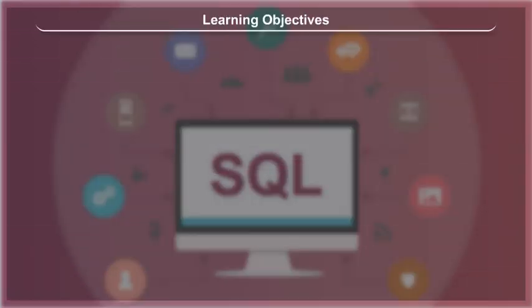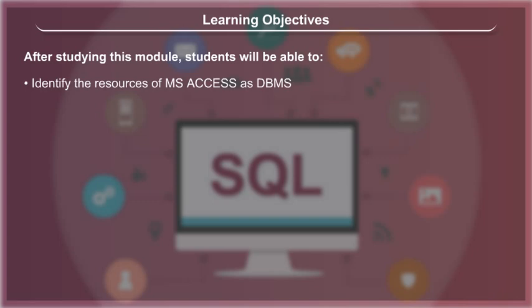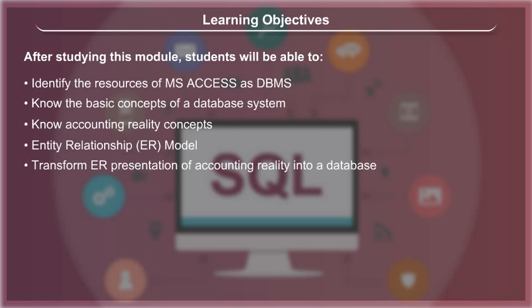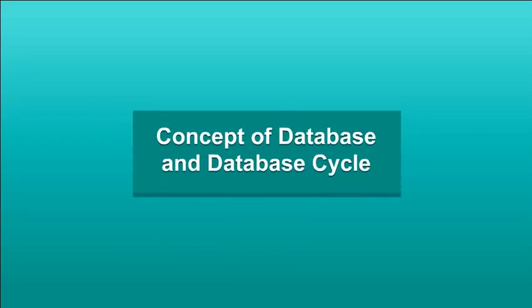Learning Objectives. After studying this module, students will be able to identify the resources of MS Access as DBMS, know the basic concepts of a database system, know accounting reality concepts, entity relationship or ER model, transform ER presentation of accounting reality into database, and develop database design for the computerized system using relational data model, retrieving accounting data and information using query.